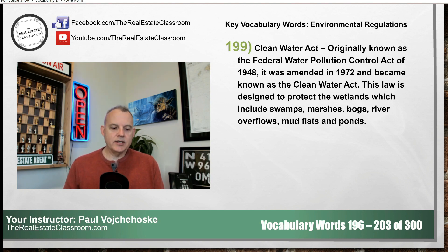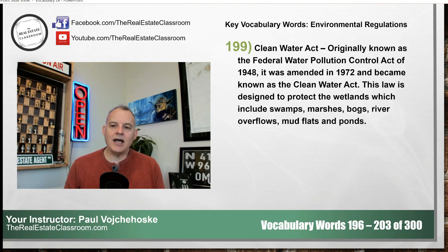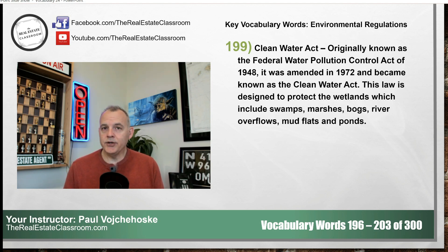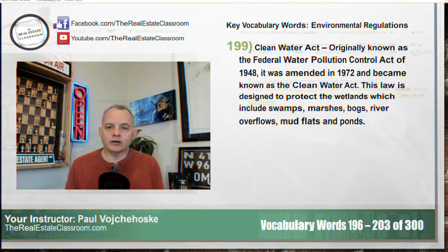What the Clean Water Act does is it's designed to protect wetlands across the United States. Wetlands include swamps, marshes, bogs, river overflows, mudflats, and ponds. If you have a pond on your farm, the Clean Water Act governs what you can and can't do with that pond. So that is the Clean Water Act.